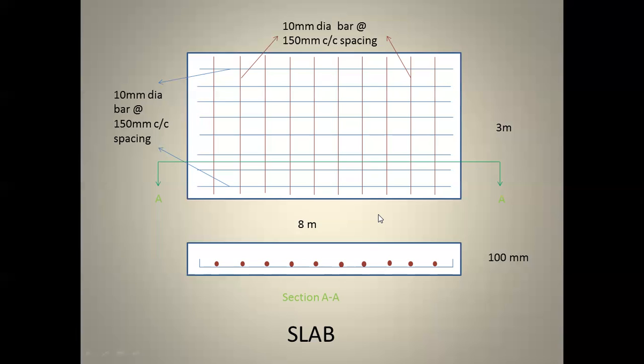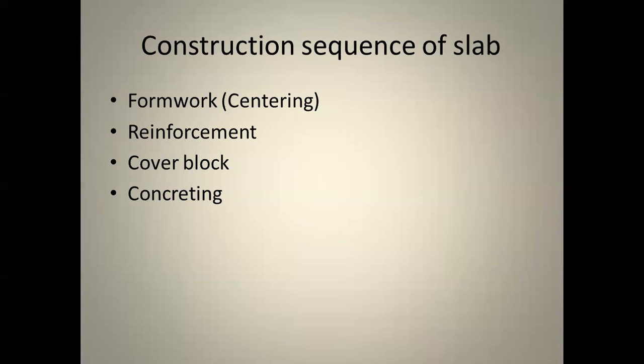Now we will see the construction sequence of a slab. The first step is formwork. Formwork is the arrangement used to support fresh concrete. When done for a horizontal member it is known as centering; when done for a vertical member like a column it is known as shuttering. Together we can call it formwork, or specifically centering for slabs and beams, and shuttering for columns.